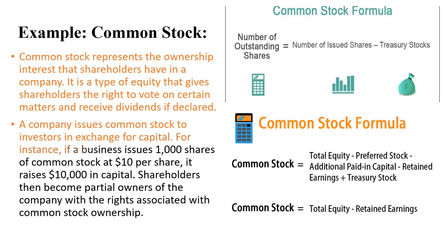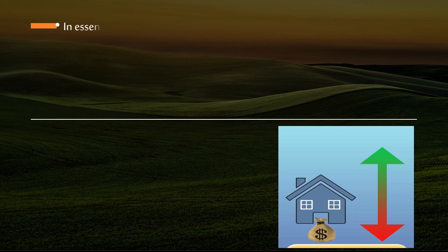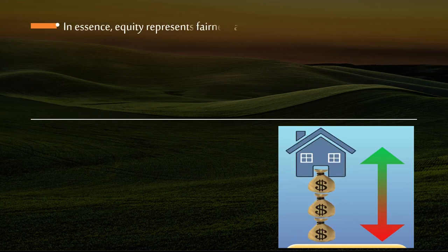For instance, if a business issues 1,000 shares of common stock at $10 per share, it raises $10,000 in capital. Shareholders then become partial owners of the company, with the rights associated with common stock ownership.